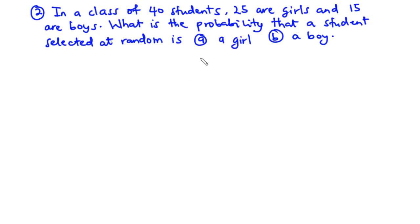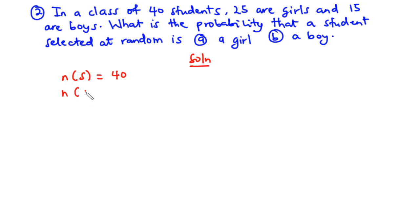Now let's solve this question together. We are told from the question that the number of students in the class is 40. The number of girls in the class are 25, and the number of boys in the class is 15.